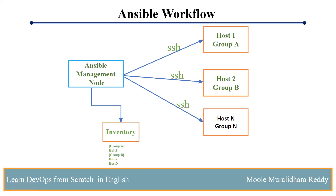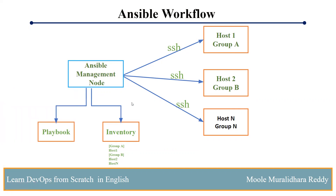Remember, before declaring servers inside the inventory file, you should set up SSH between the Ansible server and the destination servers. Also remember, Ansible is only installed on the Ansible server — the destination servers do not require Ansible installed. Just set up the SSH connection. Then inside Ansible, we create the inventory file and declare the destination servers. Once declared, we create a playbook and write the steps inside it. For example, if you want to install Java, you write a task inside the playbook to install Java. Once you run the playbook, it communicates to whatever hosts are listed in the inventory file — for example, Group A — and installs the software on those destination servers.